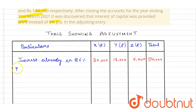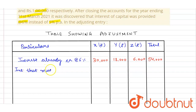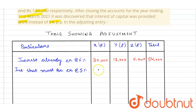Interest that must be credited at the rate of 5% per annum: for X, interest which should be credited at 5% per annum is rupees 25,000.